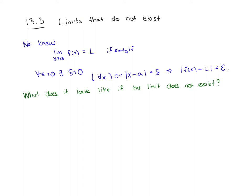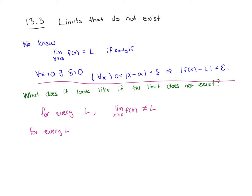So what does it look like if the limit doesn't exist? That means for every single possible value the limit could equal, it doesn't equal that value. So I need there to be no L such that the limit equals L. For every L we need that the limit as x goes to A of f of x doesn't equal L. So the limit doesn't exist at some point if it's never equal to L, which means for every L we get the negation of our limit definition.